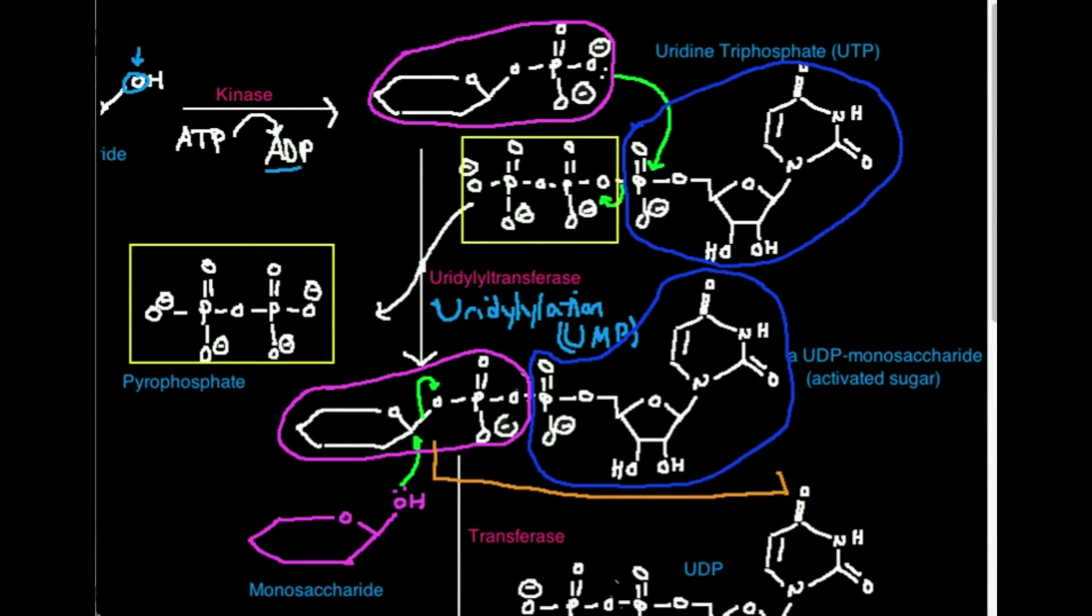So that means if I try to have another monosaccharide, or I want to have it attack this carbon right there, maybe, then this whole UDP can leave as a fantastic leaving group. It's very resonant stabilized, and the molecule UDP monosaccharide is very high in energy. So that whole thing is going to be a leaving group.